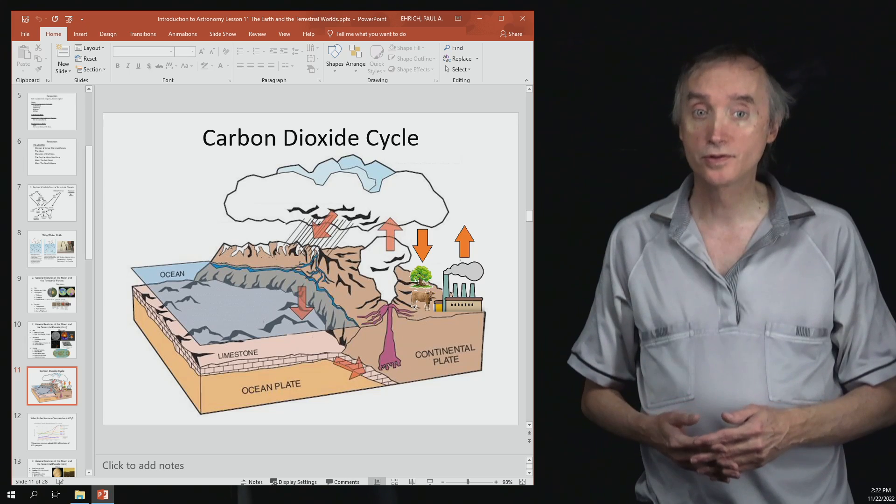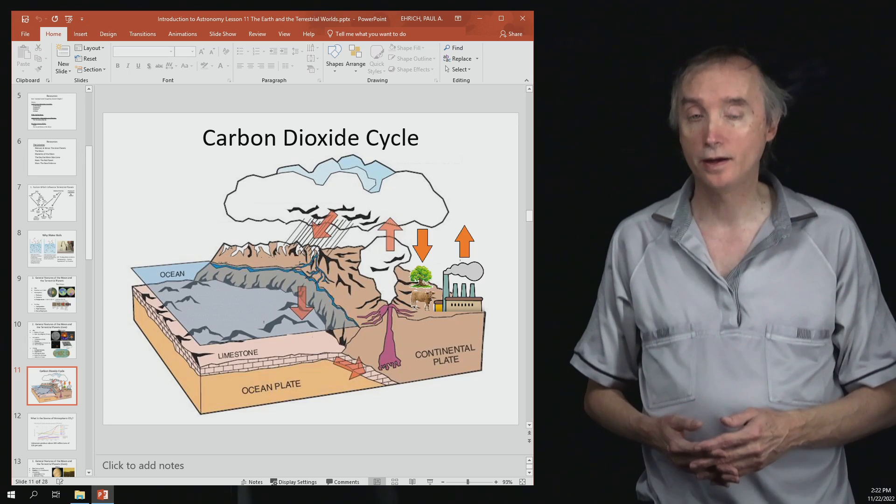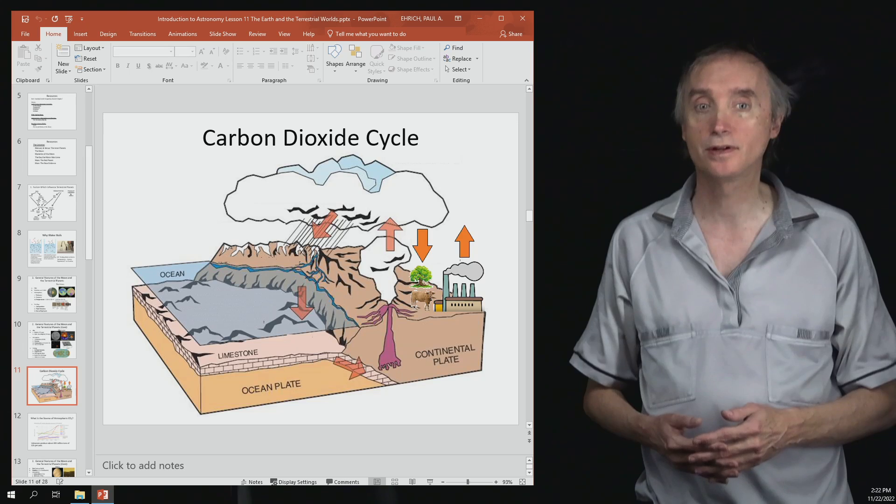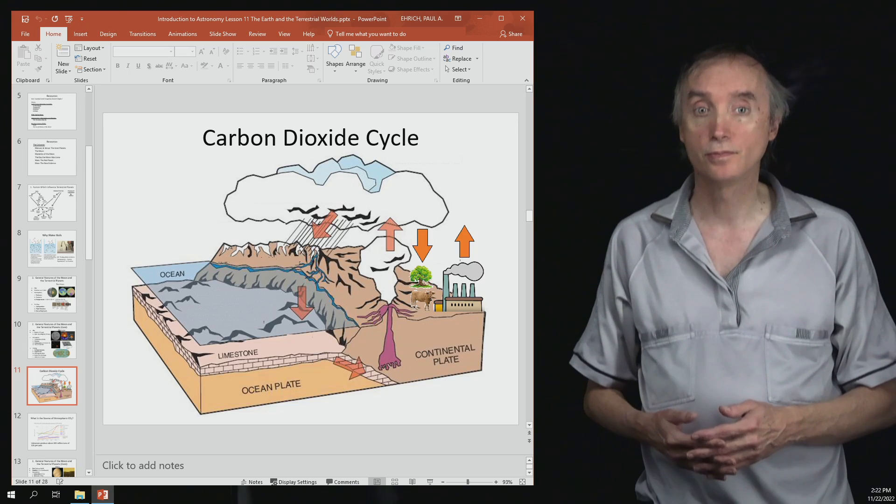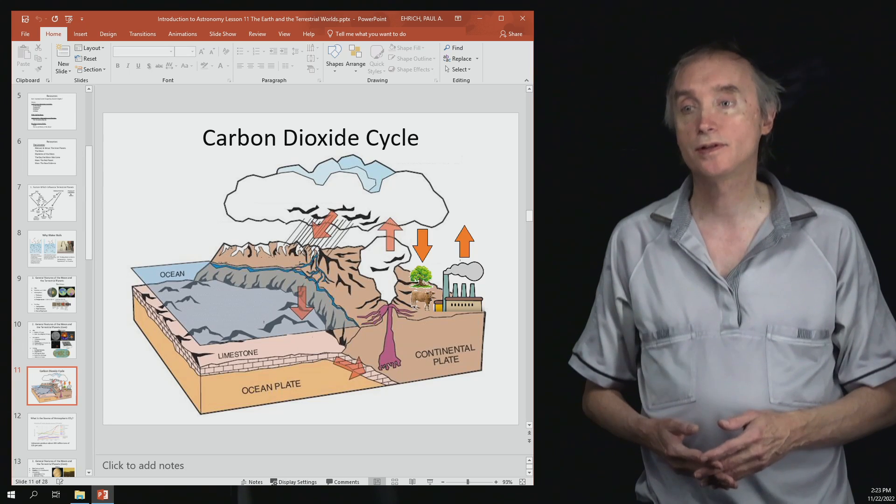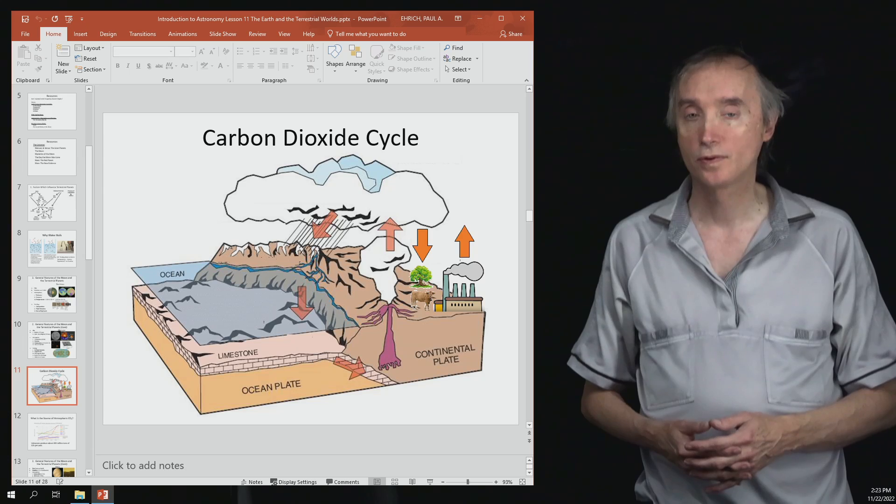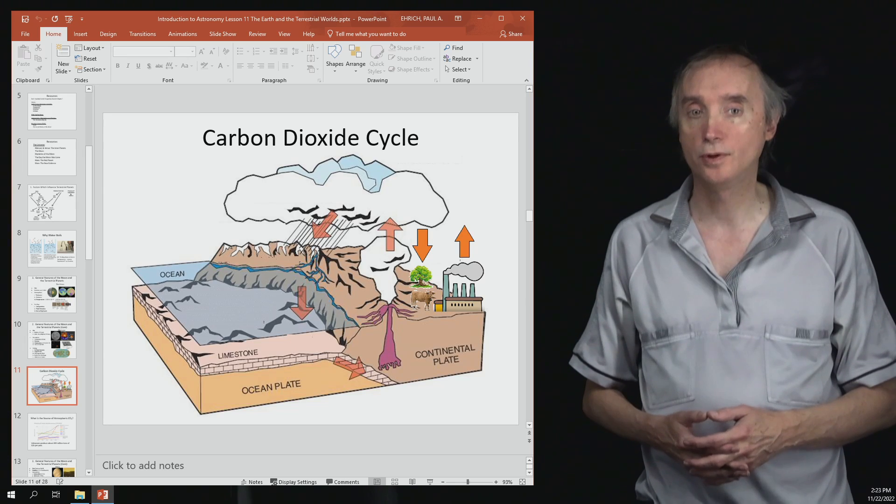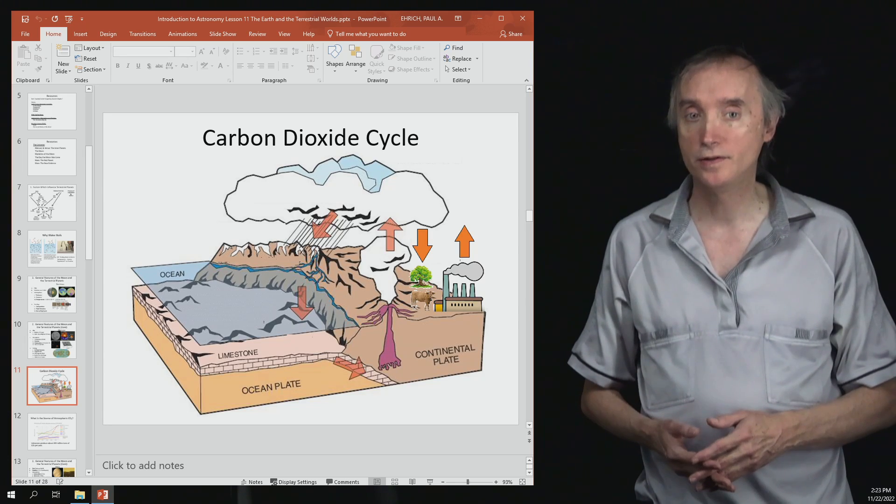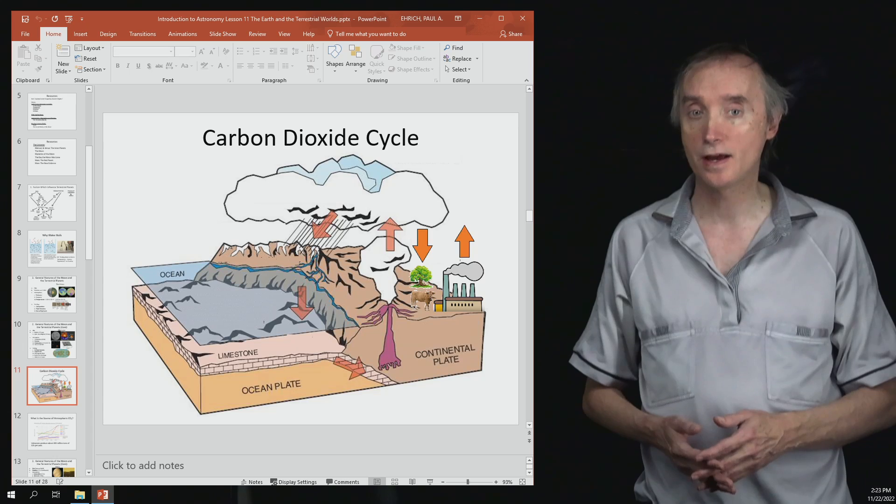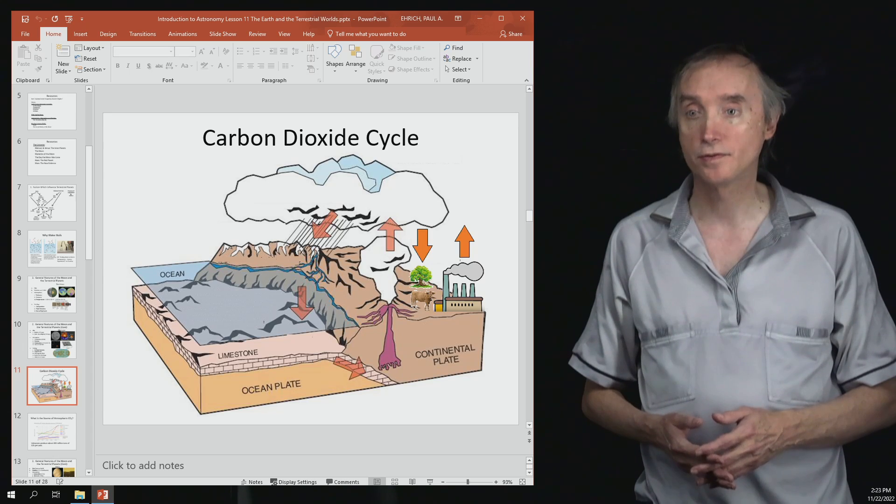Earth also has another way of getting rid of carbon dioxide, and that's green plants through photosynthesis. Any organism that takes in carbon dioxide and converts it into oxygen. Earth is special in that we've got alternate ways of putting carbon dioxide into the atmosphere and different ways of getting rid of it.